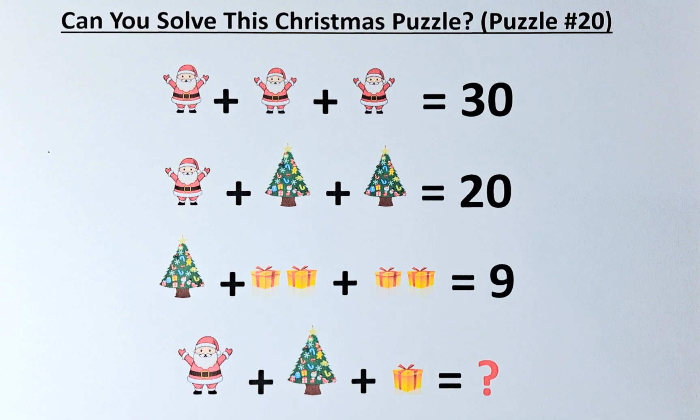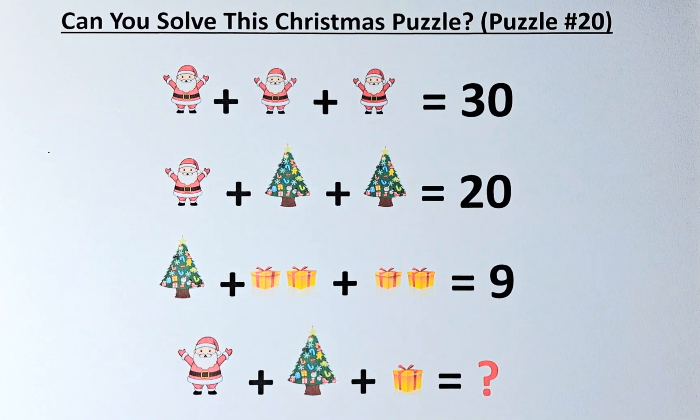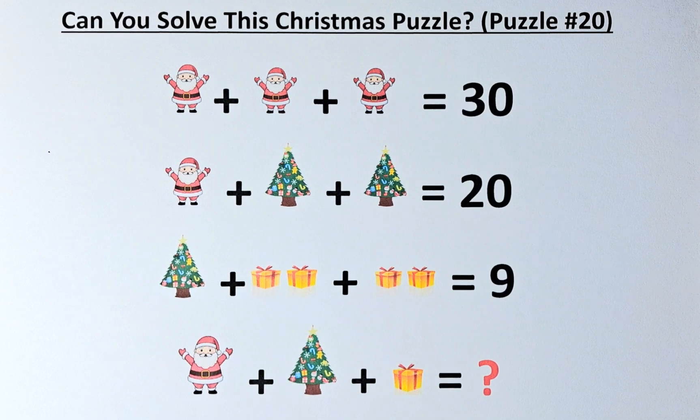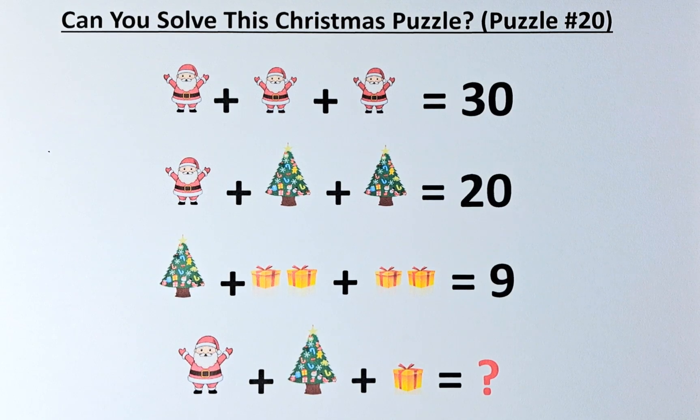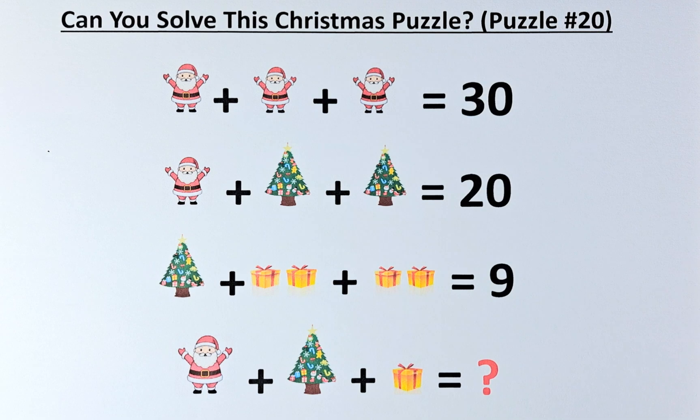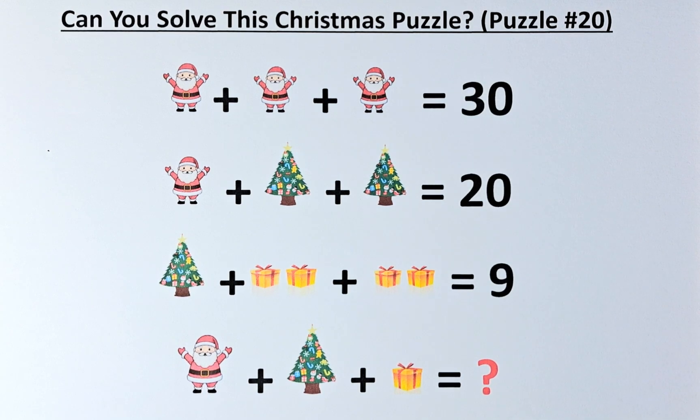Santa Claus plus Christmas tree plus Christmas tree equals 20, Christmas tree plus present plus present equals 9. What then is Santa Claus plus Christmas tree plus present? So without further ado, let's solve this. It's quite straightforward.